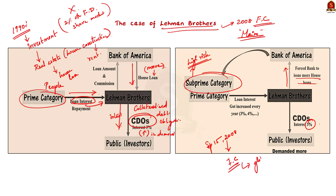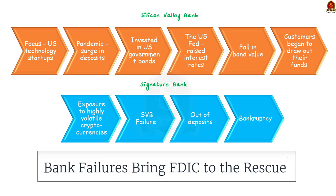You can now understand how a small failure in the financial market can have global repercussions. With this understanding, we will see what happened in the US recently. First, let us look at the Silicon Valley Bank case. The Silicon Valley Bank focused mainly on US technology startups.